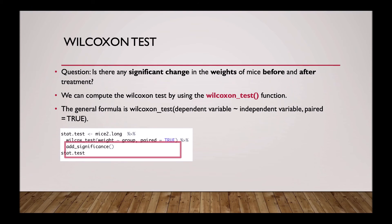Here is the formula for our data set. As you can see, we have our dependent variable, which is weight, and our independent variable, which is group. We have also told R that paired equals true.